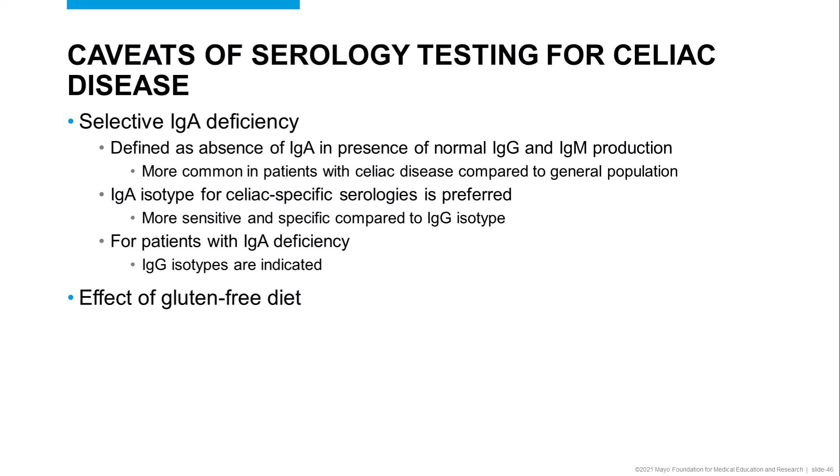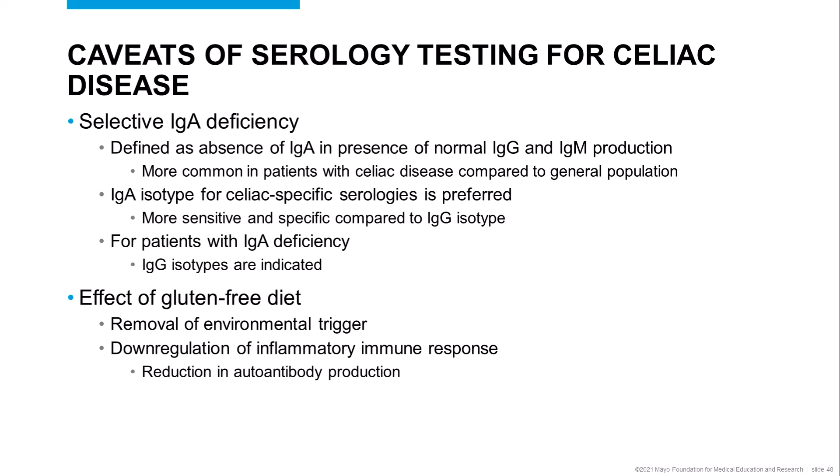The other issue that can impact the utility of serology testing is the effect of a gluten-free diet. In a patient with celiac disease, removal of gluten from the diet leads to down-regulation of the inflammatory immune response, ultimately leading to reduced autoantibody production. This is useful when monitoring patients, as decreasing reactivity of the celiac-specific autoantibodies is consistent with a favorable response to a gluten-free diet. However, if a patient is already following a gluten-free diet before the diagnosis of celiac disease has been established, serology testing becomes less useful as there is a risk of a false negative result.